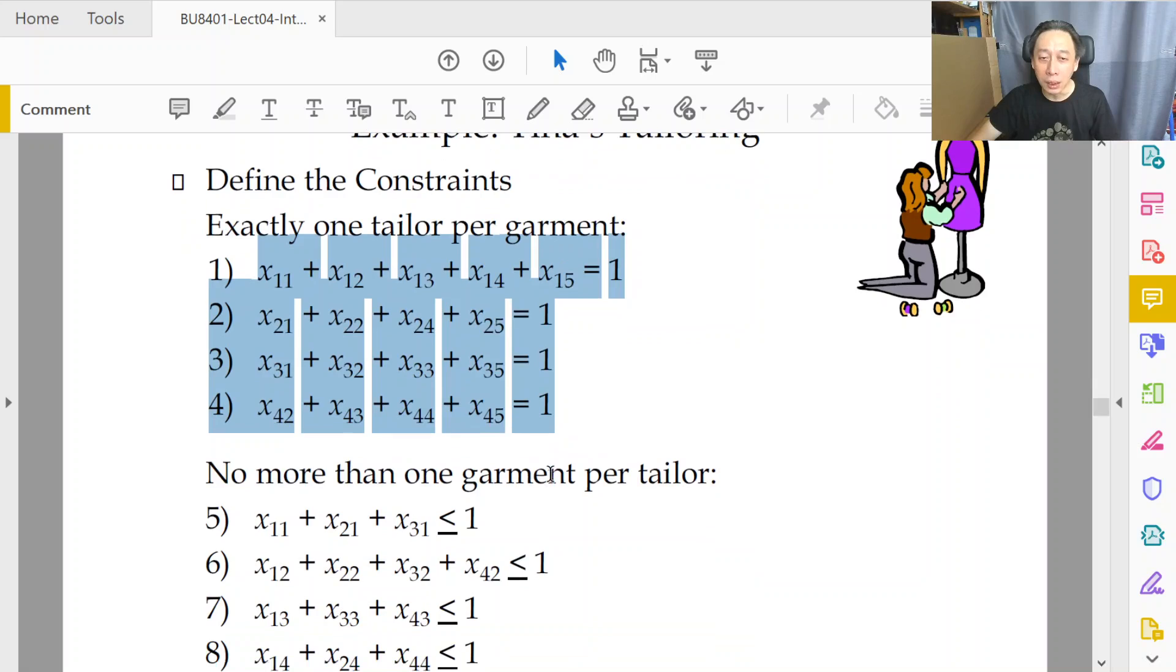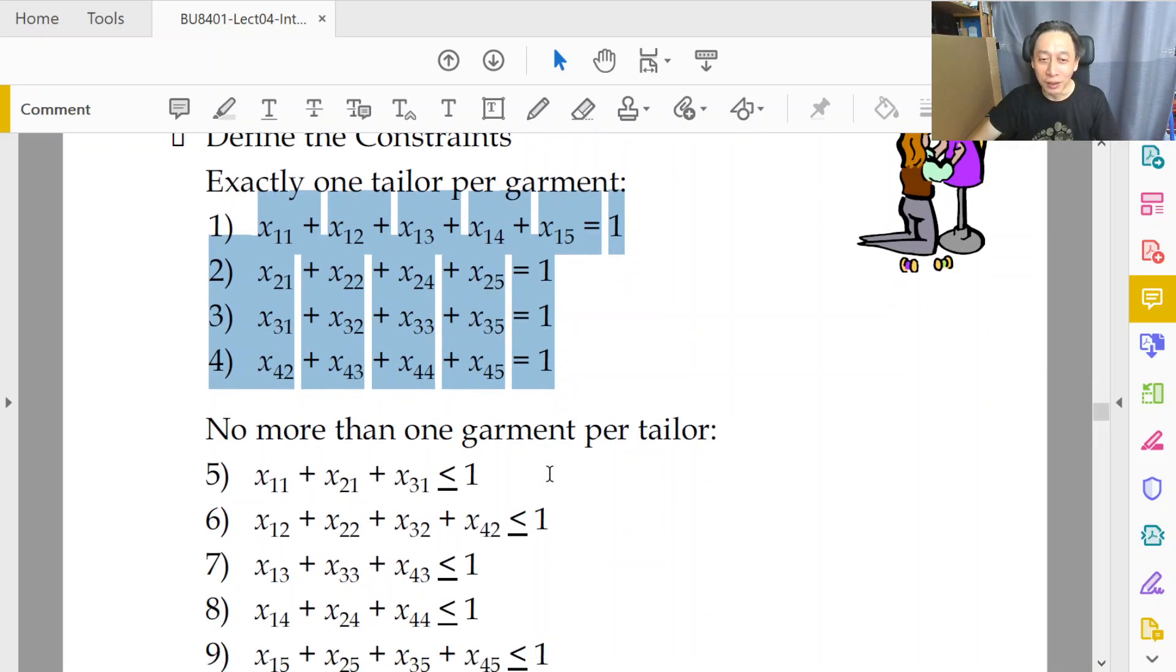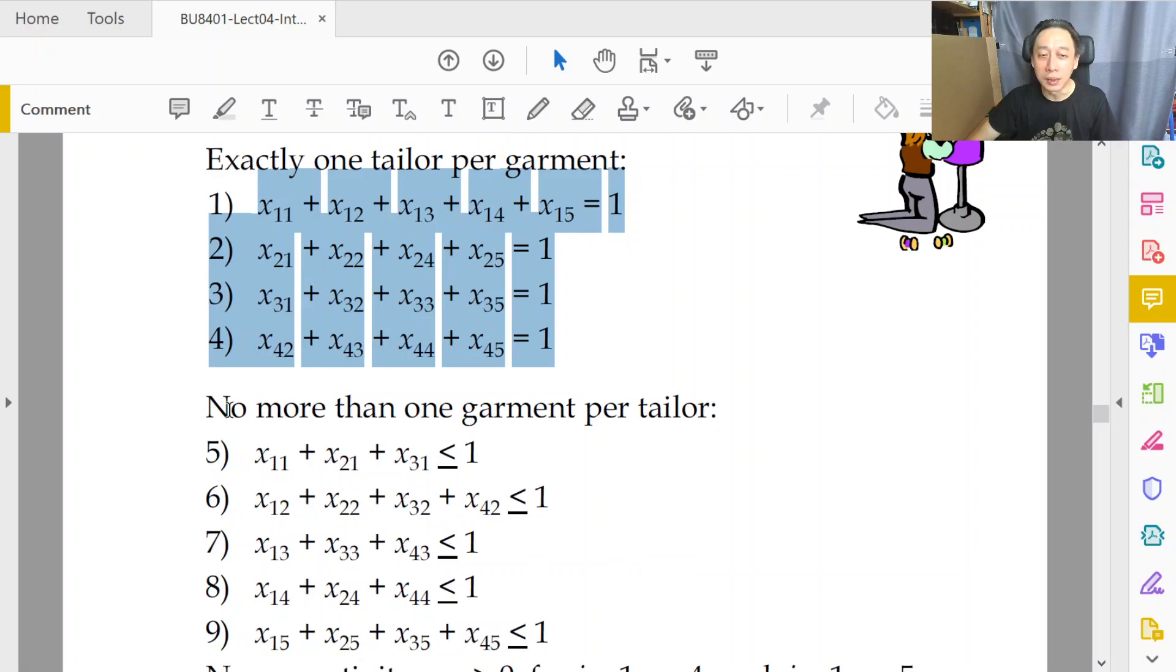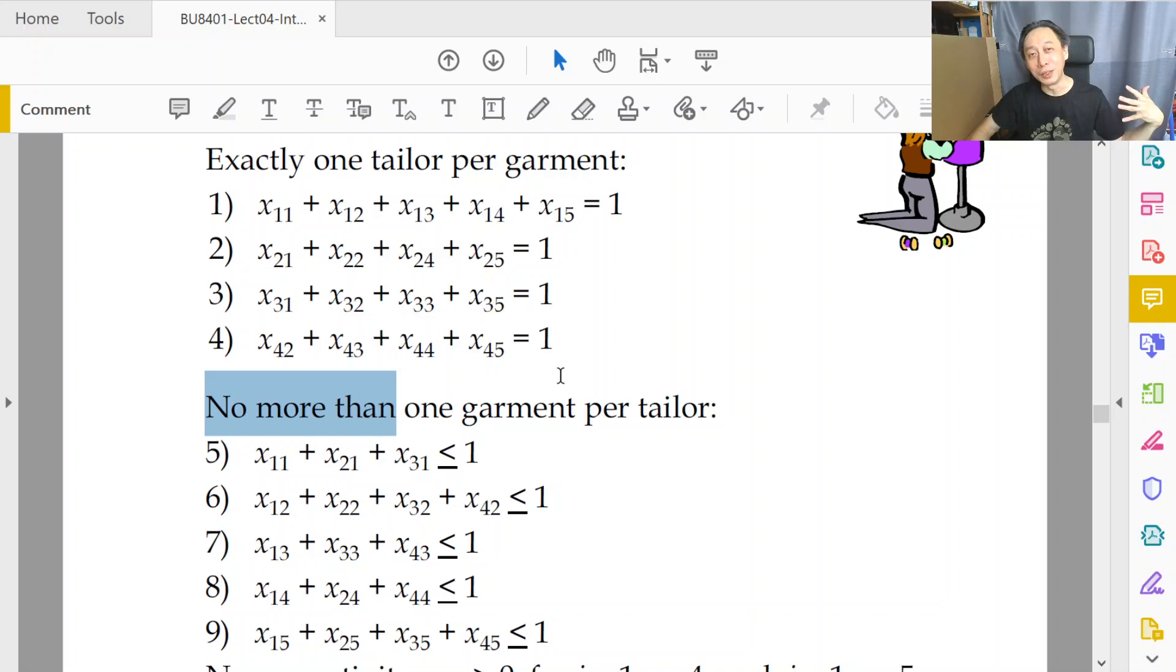And likewise, our business can grow in terms of ability to employ more tailors, more workers. So policy is no more than one garment. How come no more than one? How come not exactly one? Well, pigeonhole principle. You might want to Google that. What that says is a very simple idea. That is, we have four garments and five tailors. So pigeonhole principle says, definitely there'll be one, someone, one tailor who is left unassigned.